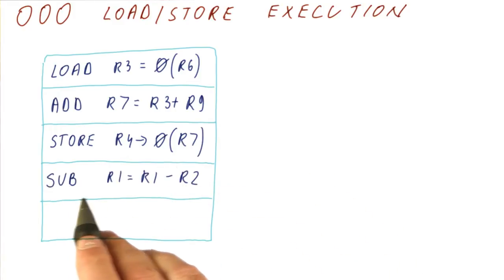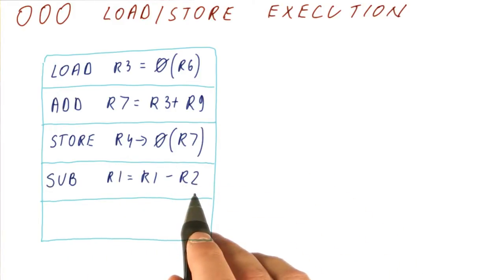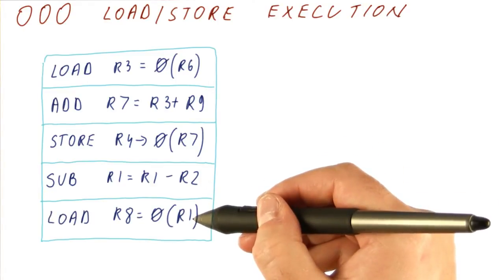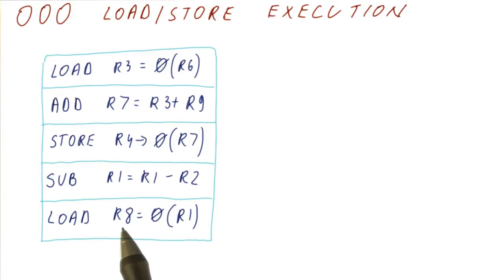Next, we have a subtraction, R1 minus R2 goes into R1. And finally, we use R1 as an address to access memory and put the value into R8.